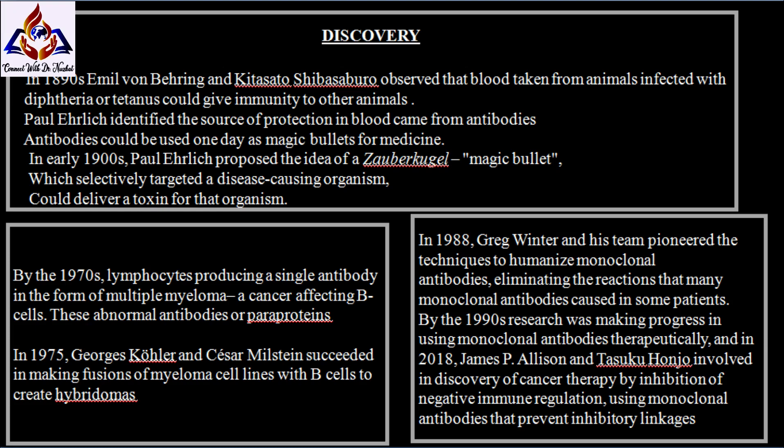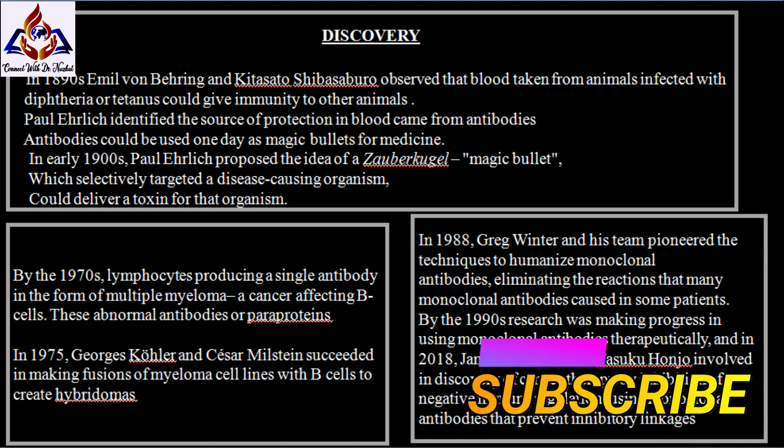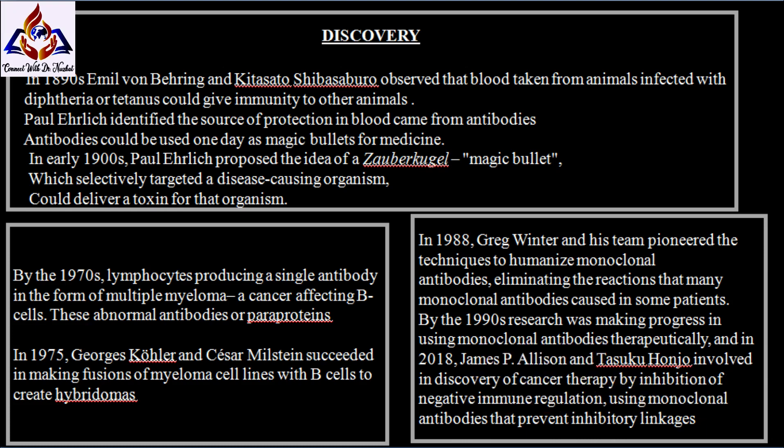In 1973, Gerald Köhler described the production of monoclonal antibodies using human-mouse hybrid cells. This work remains widely cited among those using human-derived hybridomas. In 1975, George Köhler and César Milstein succeeded in making fusions of myeloma cell lines with B cells to create hybridomas that could produce antibodies specific to known antigens and that were immortalized.